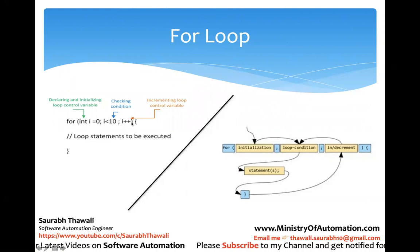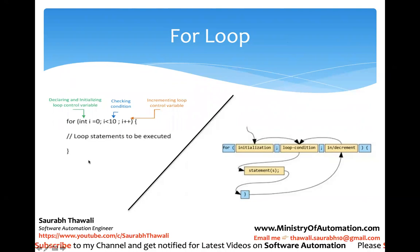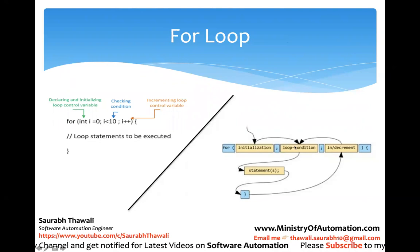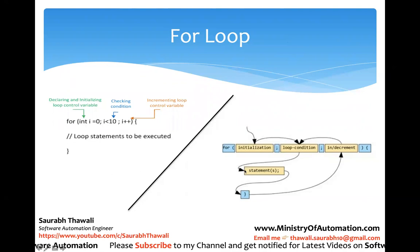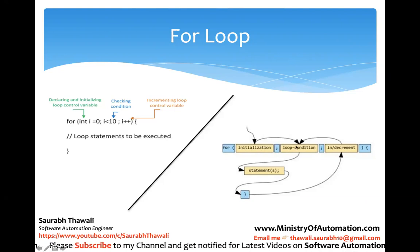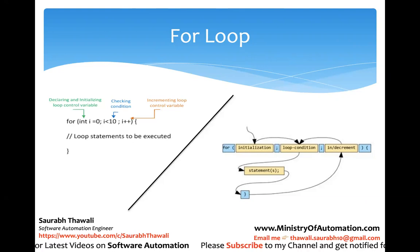Let's look at the syntax once more. Here the declaration happens — we declare the counter 'i' equal to zero. This is the condition, and this is the increment/decrement. Inside the for loop we can write whatever number of statements we want. Control comes here, initializes, then checks the condition — if true, comes inside, executes whatever statements are there inside the for loop, then goes back to increment or decrement the counter, checks the condition again, and re-enters. This is how the for loop works.